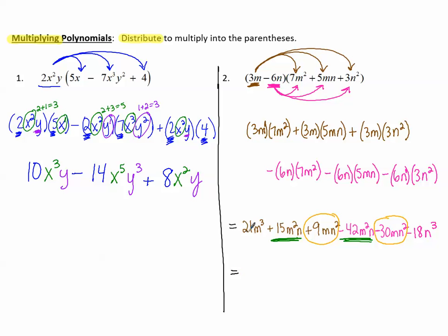This will equal 21m³. There's no other m³'s. I have the 15m²n and the -42m... Sorry, m²n and another m²n which makes -27m²n.